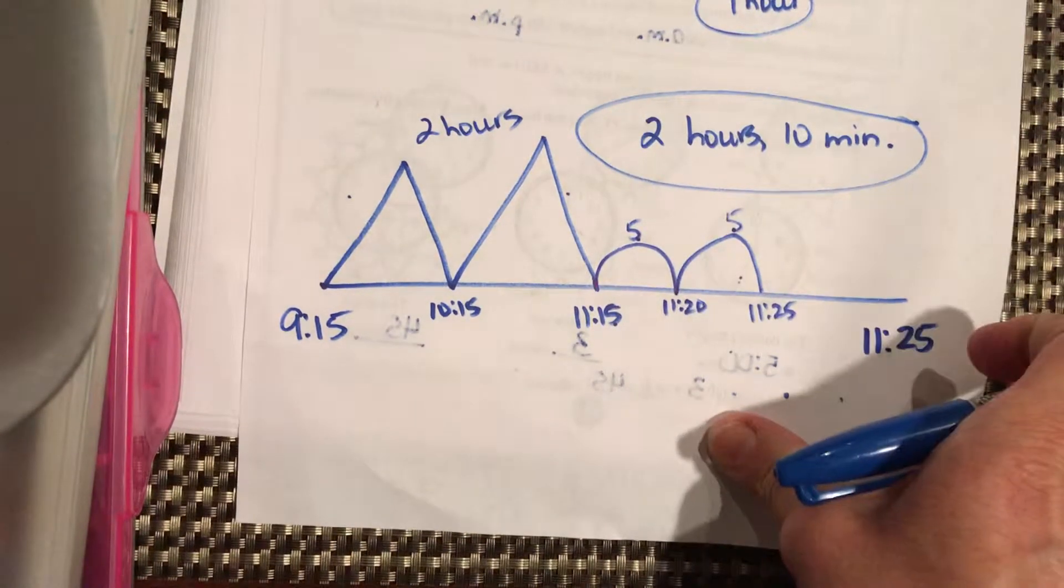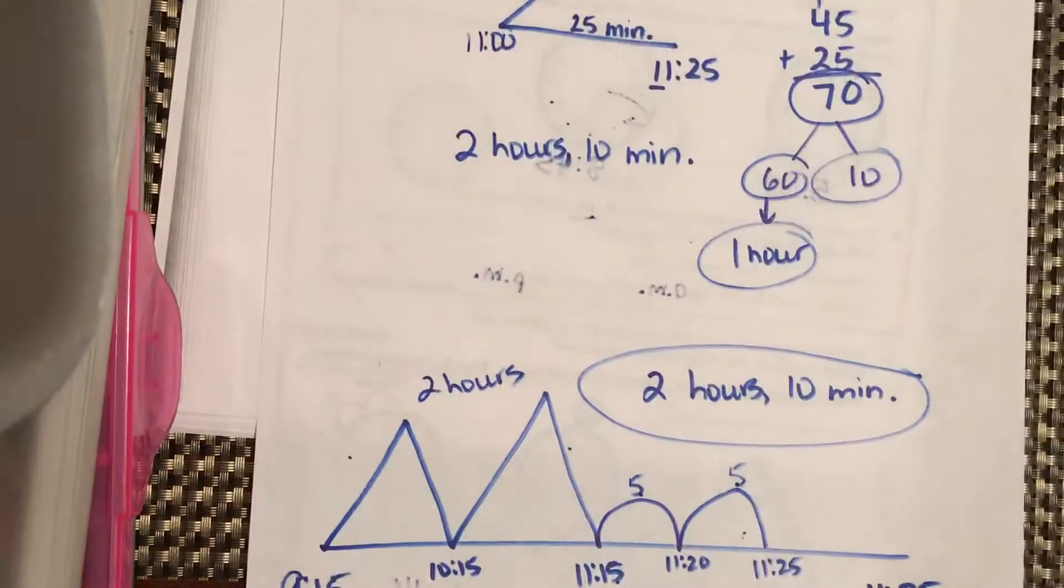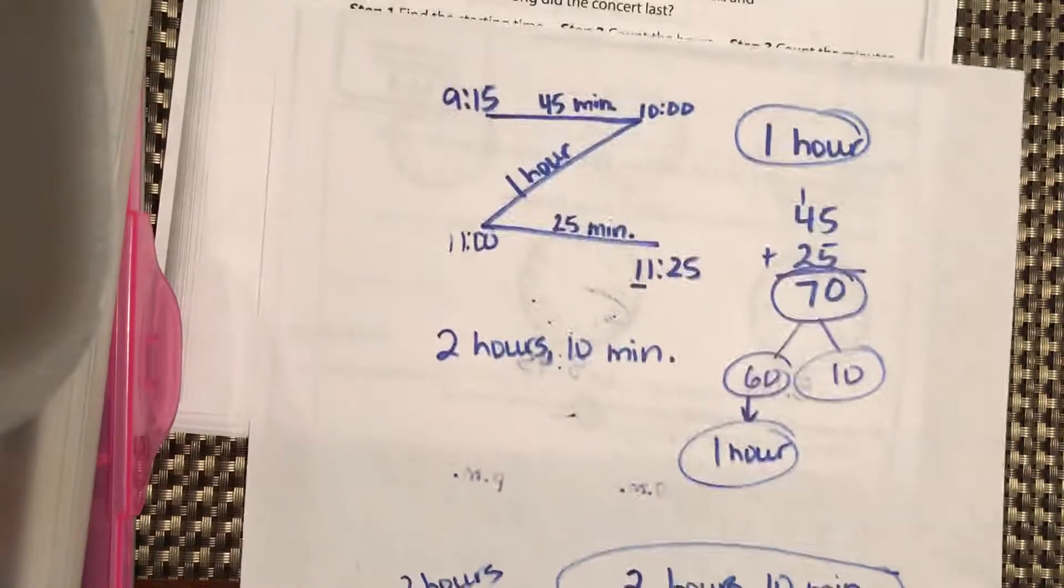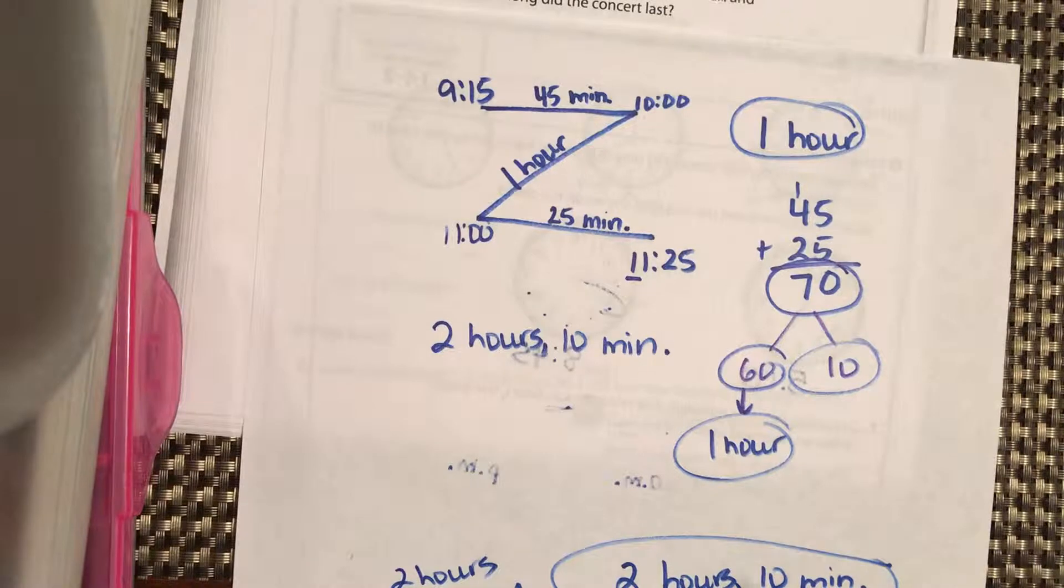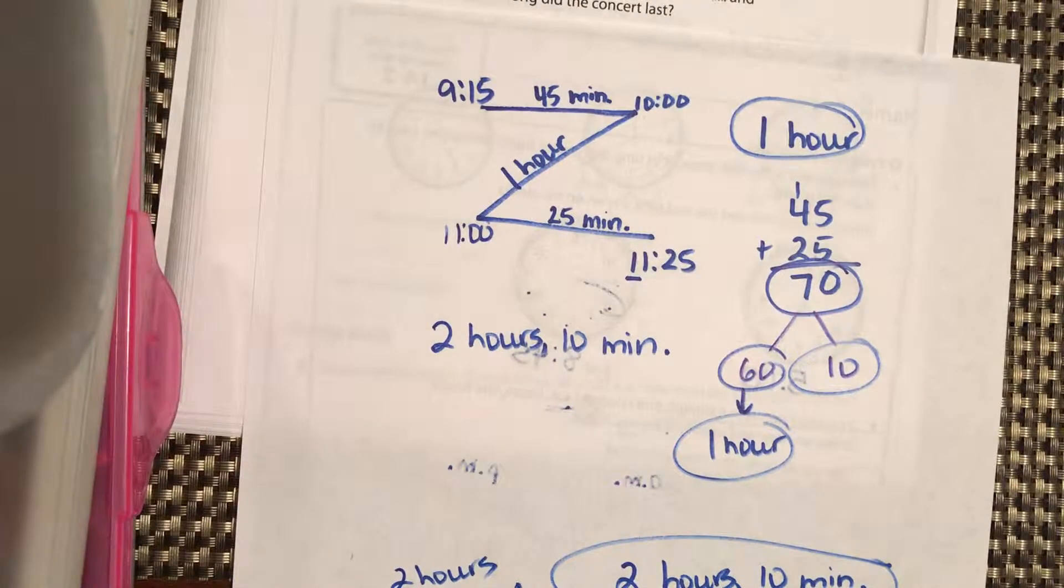But, they both work. They both work. It just gets tricky when you have to add your minutes and it comes up as 60 or above. As soon as you're at 60, you have to change that out for an hour. We cannot say it's 1 hour and 70 minutes. We just don't work that way. That's like saying it costs 103 cents. We don't say that. We say it costs $1.03. You've got to change those 100 pennies in for a dollar and you have to change your 60 minutes in for an hour.